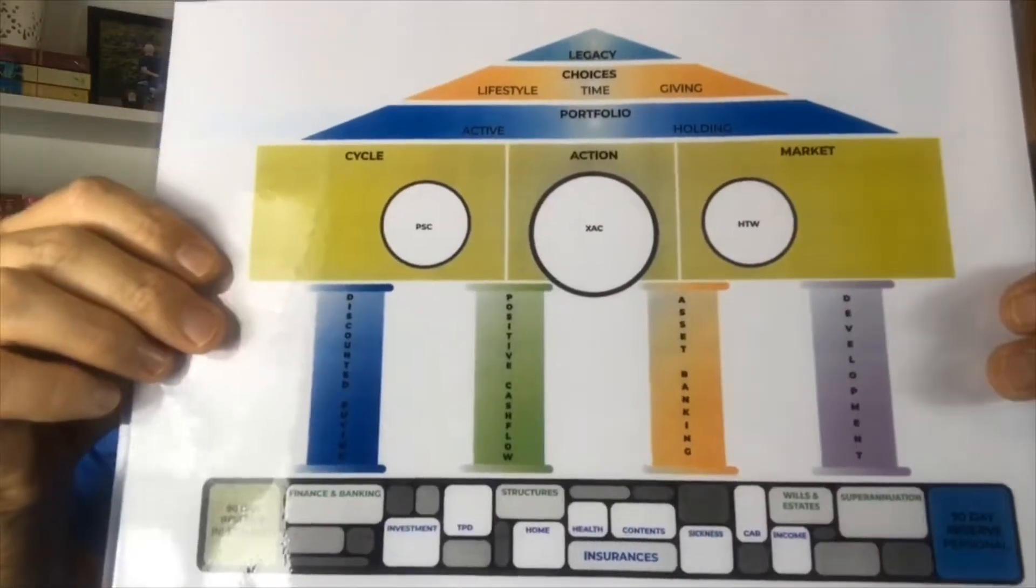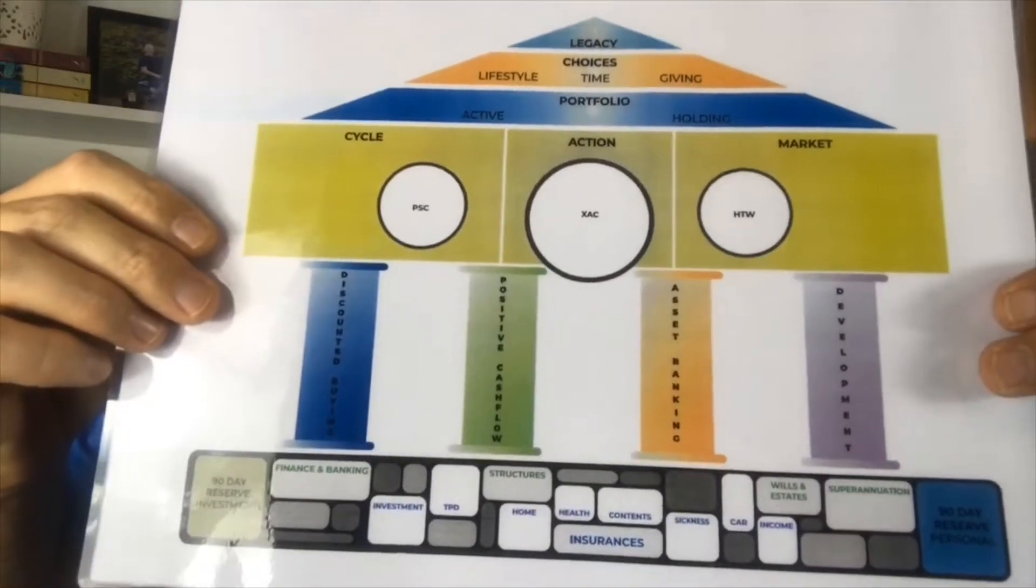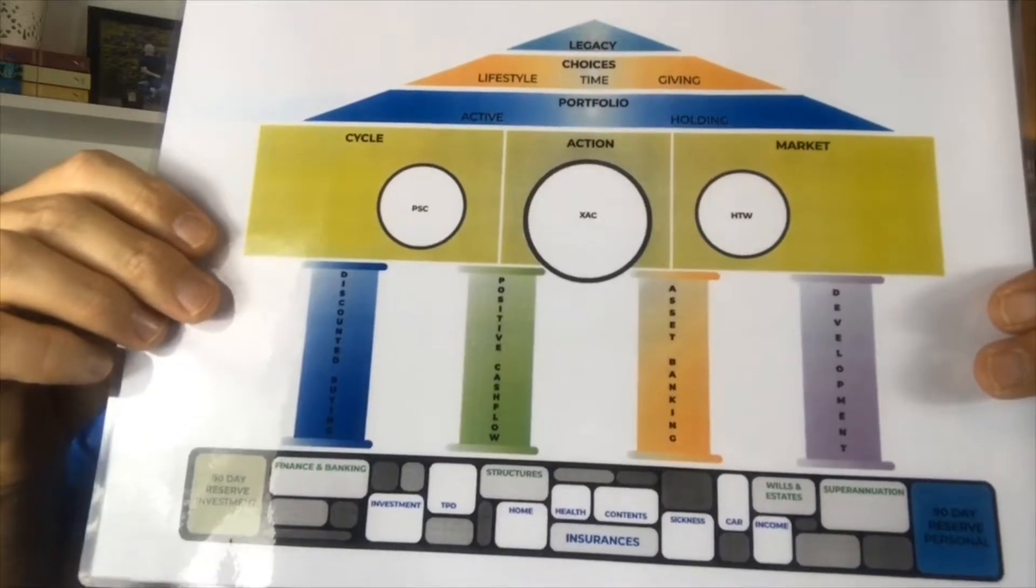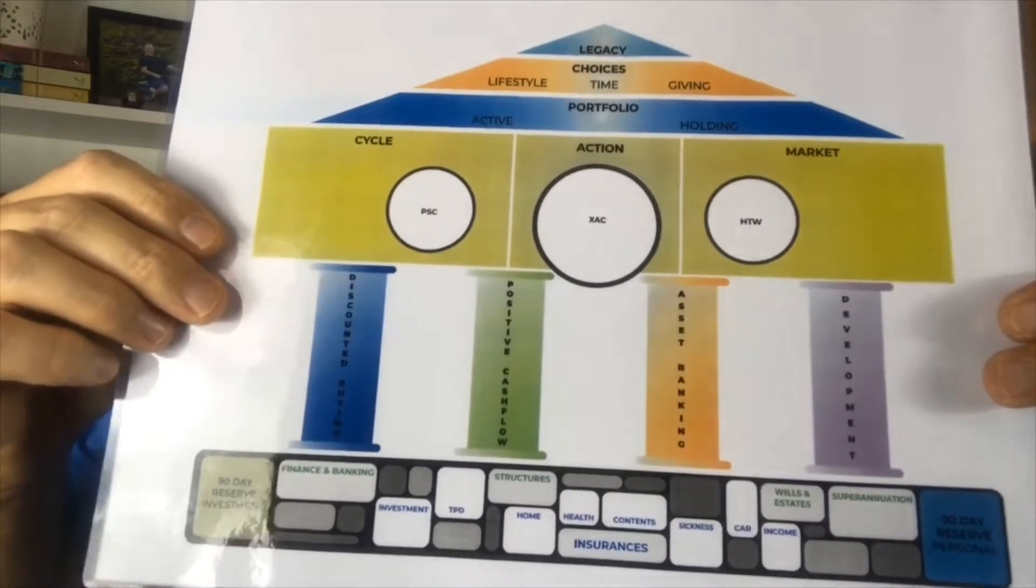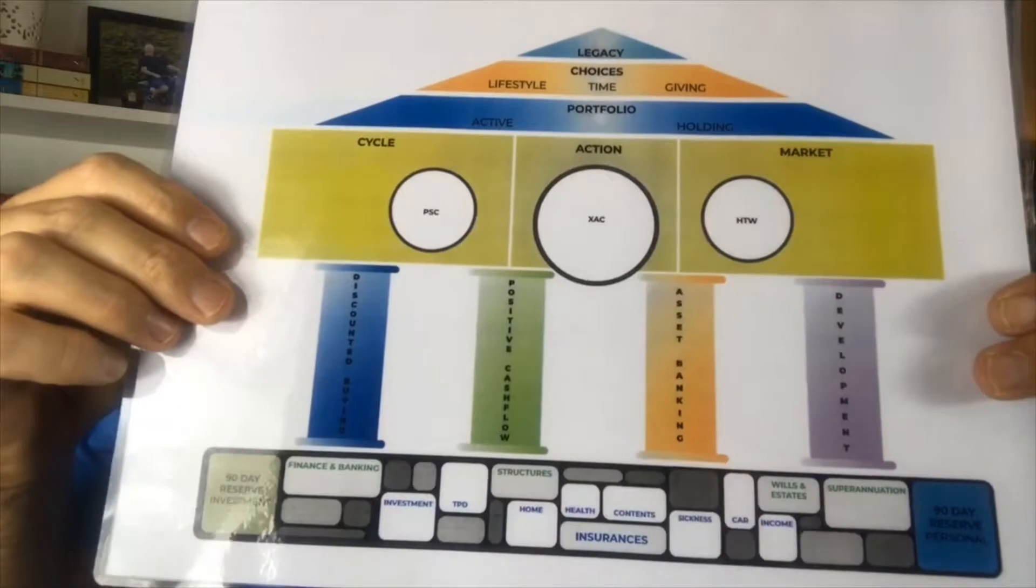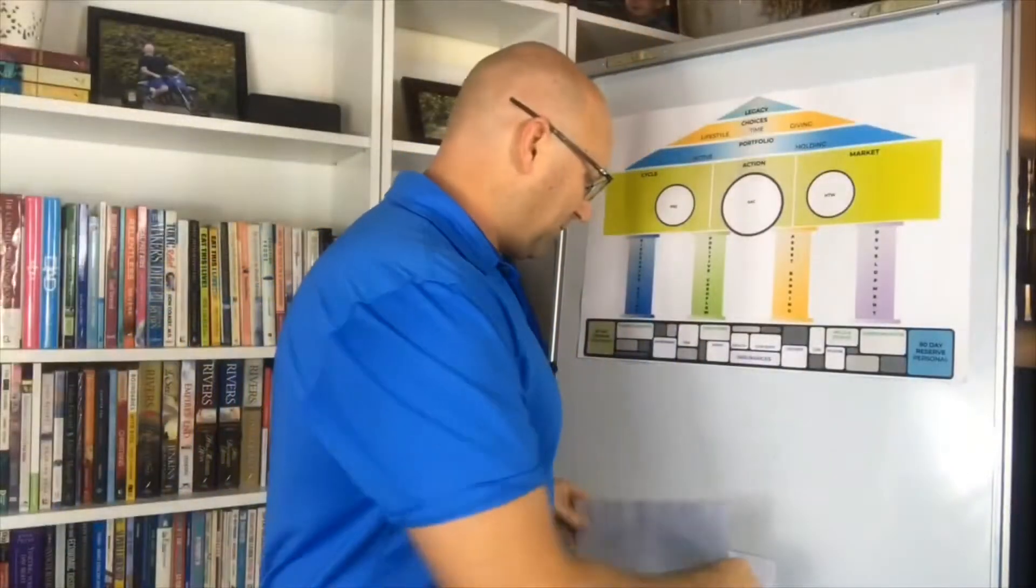Our pillars there are discounted buying, asset banking or land banking, positive cash flow, and development. And that's the four pillars.